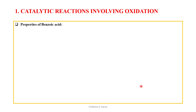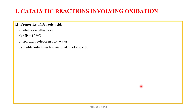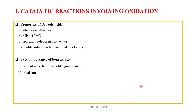Properties of benzoic acid: it is a white crystalline solid with a melting point of 122°C. It is sparingly soluble in cold water but readily soluble in hot water, alcohol, and ether. It is found in certain resins like gum benzoin and balsam, and found as hippuric acid (benzoylglycine) in the urine of horses.